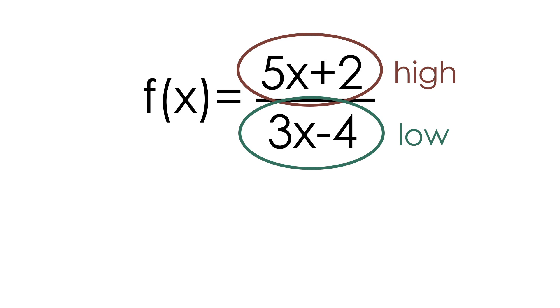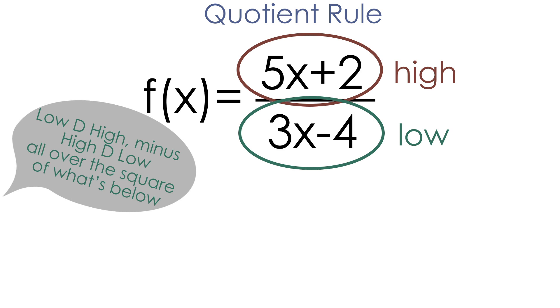So now I can introduce you to the formula we use to take the derivative of a function using the quotient rule, and the formula is low d high minus high d low all over the square of what's below. It rhymes, so it's a little bit easier to memorize.